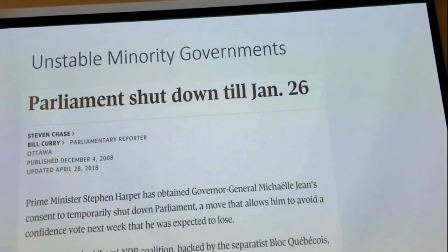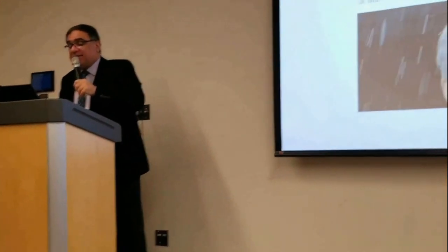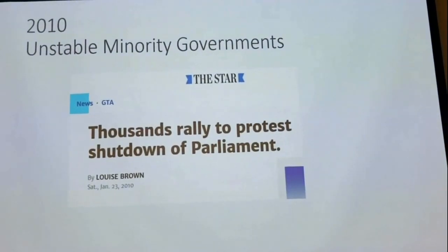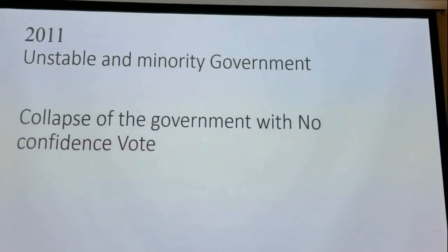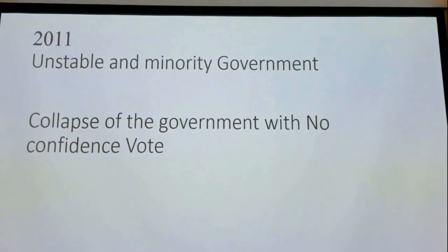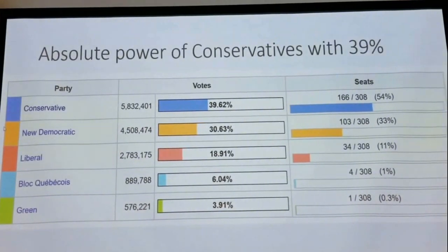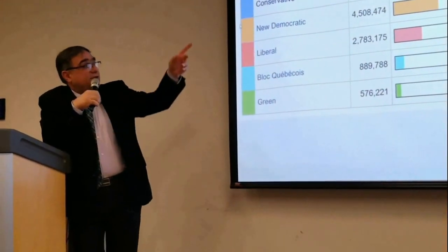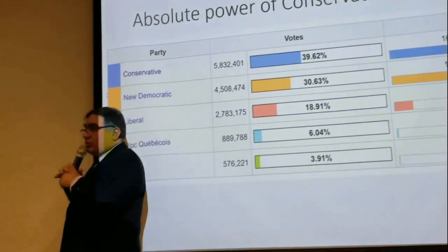Another unstable minority government in 2008 was followed by the first shutdown of parliament by the prime minister, then a second, then a third shutdown. People went to the streets to protest. In 2011, the unstable minority government collapsed with a no-confidence vote. In that election, conservatives with 39% of the vote — just 2% more than before — got 54% of the seats and formed a majority government, though only a minority of people wanted it.